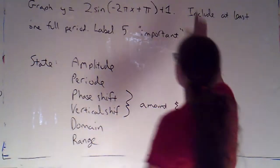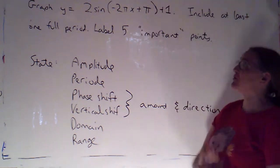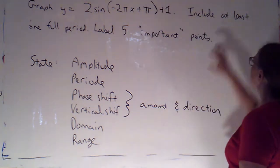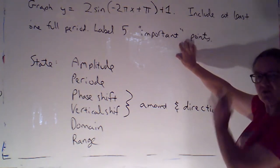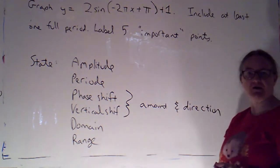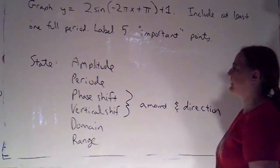As promised, here's an example where we're doing every possible transformation to a sine graph in this case. So my directions are to include at least one full period and label the five important points. Just want to familiarize you with those directions.